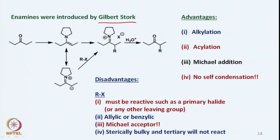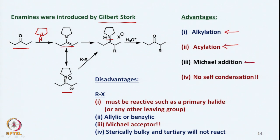Gilbert Stork at Columbia University introduced enamines. We can take a ketone and react it with a secondary amine like pyrrolidine to get the enamine, which is in resonance with an iminium species. When an electrophile Rx is added, the negative charge attaches to the carbon, and hydrolysis then regenerates the ketone. This way we can do alkylation, acylation, and Michael addition with no self-condensation — which is a very useful advantage.